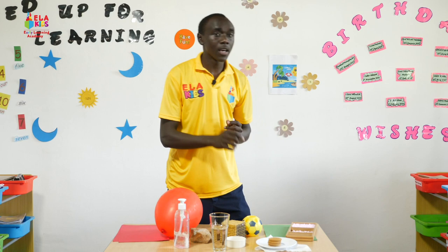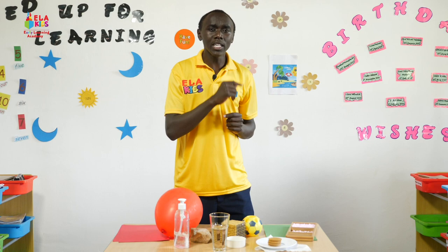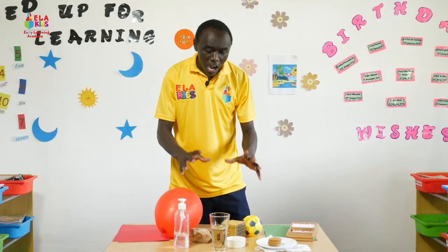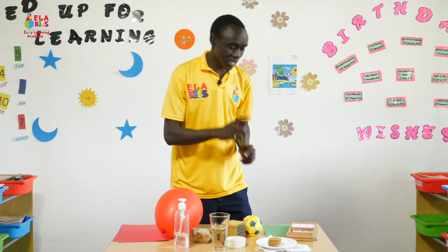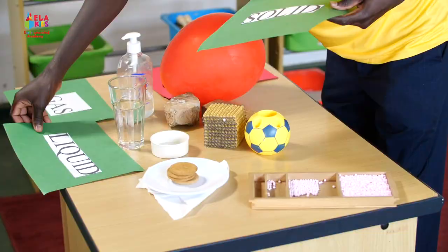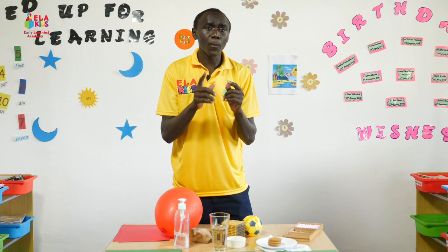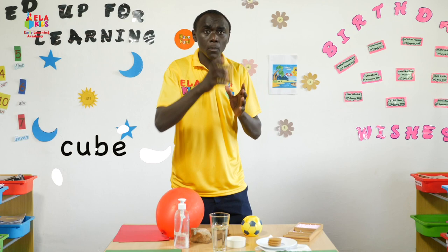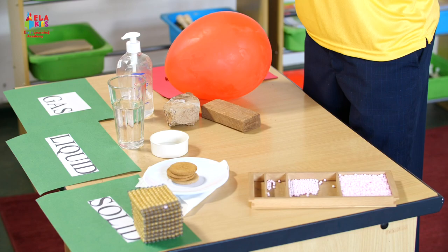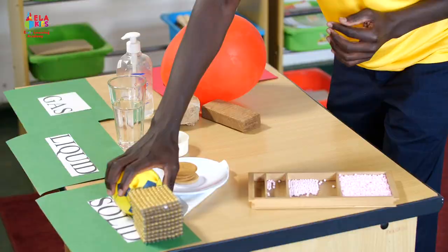Now you've learned about the particle arrangement in solids, liquids, and gases. Let's subcategorize the materials on my table. Solids: tightly packed, cannot be compressed further. Starting with this cube — we cannot compress it any further, so it is a solid. This piece of stone — we cannot compress it further, therefore it's also a solid.